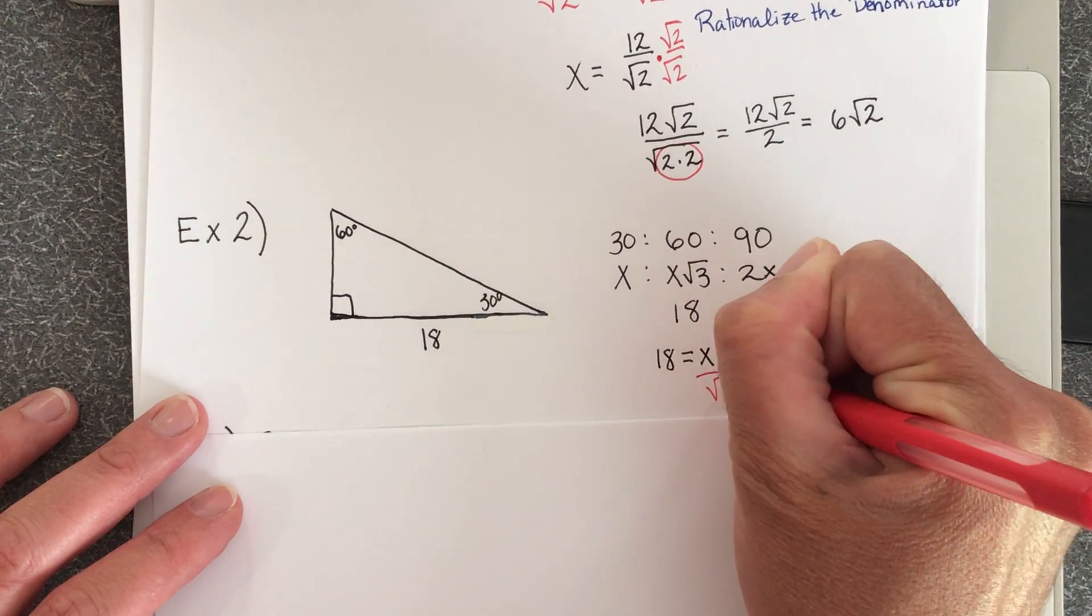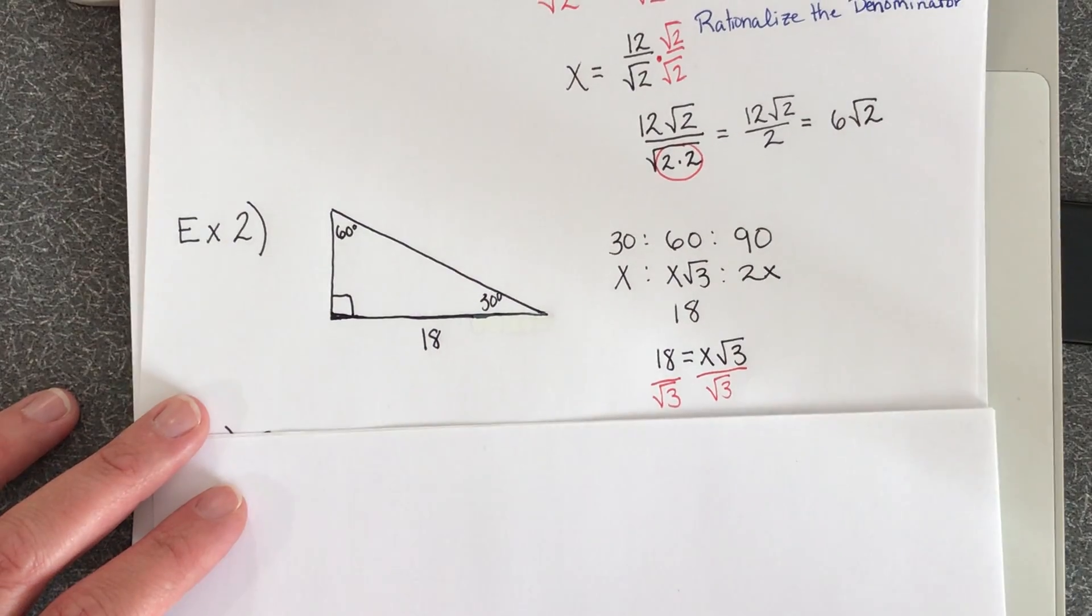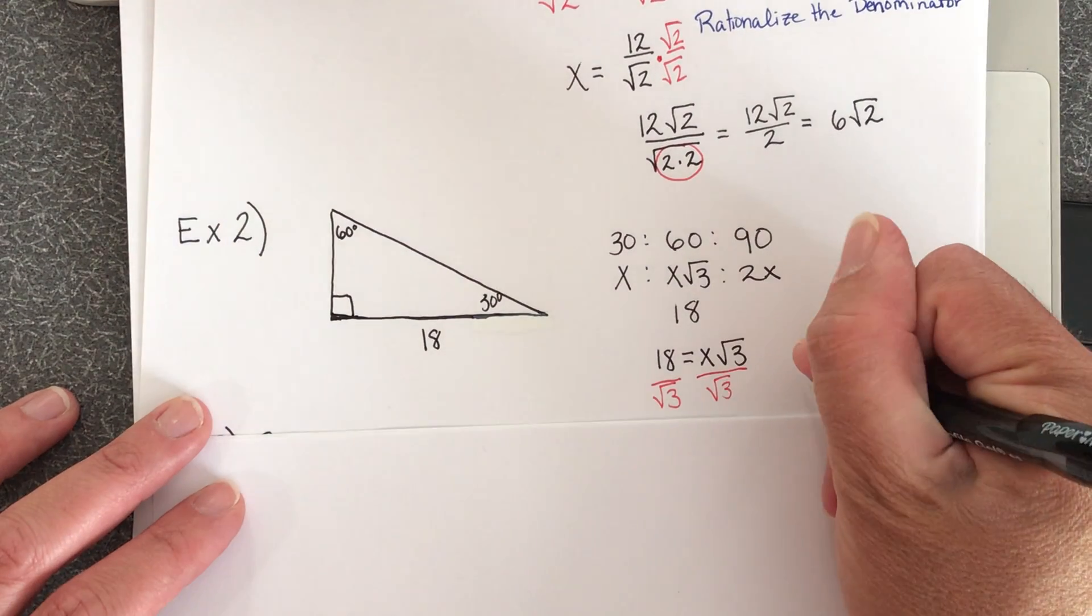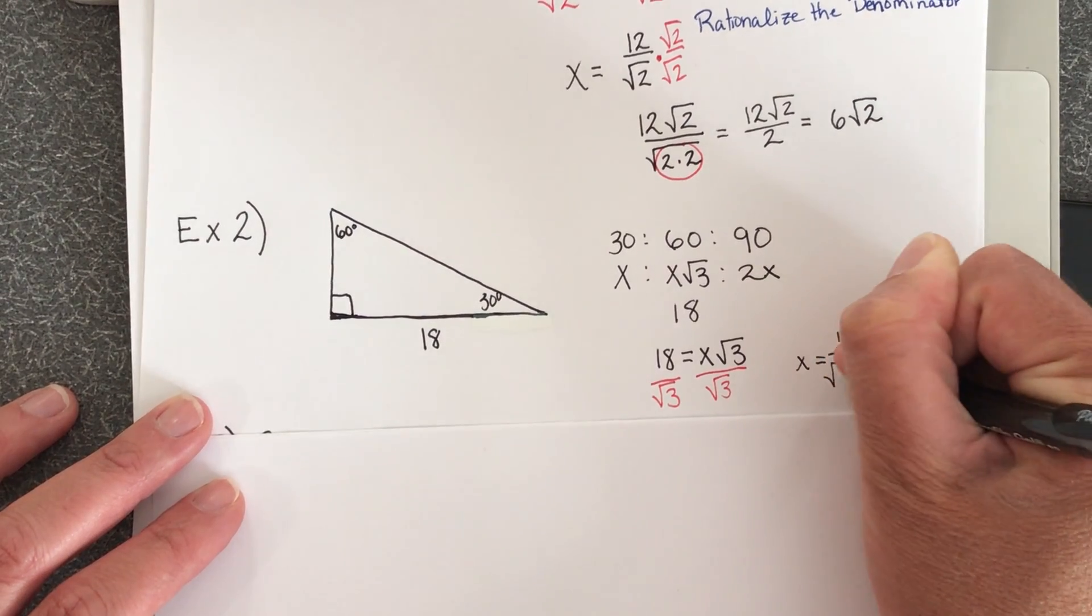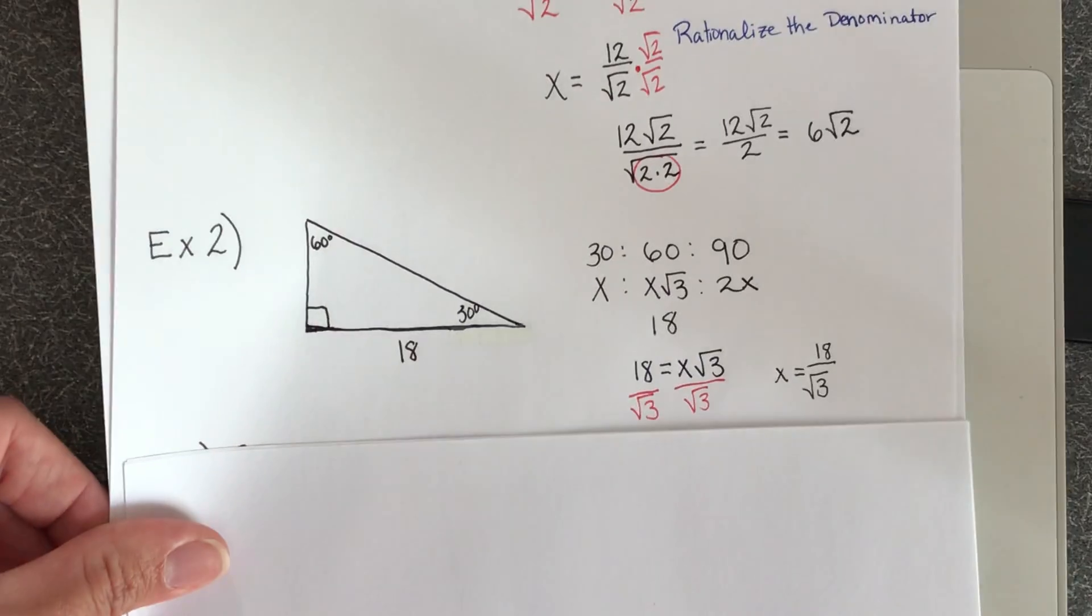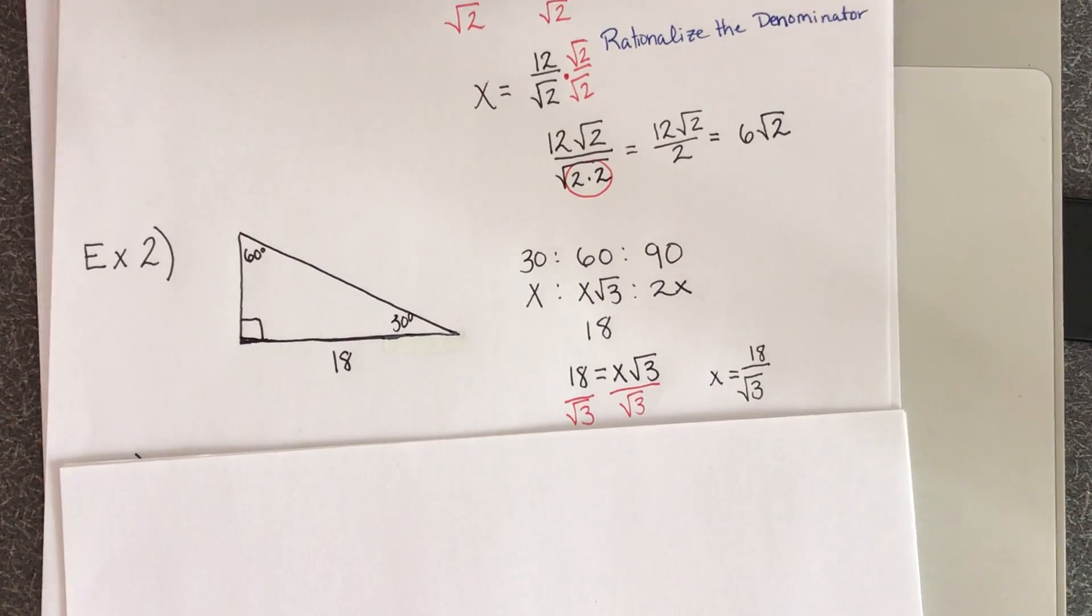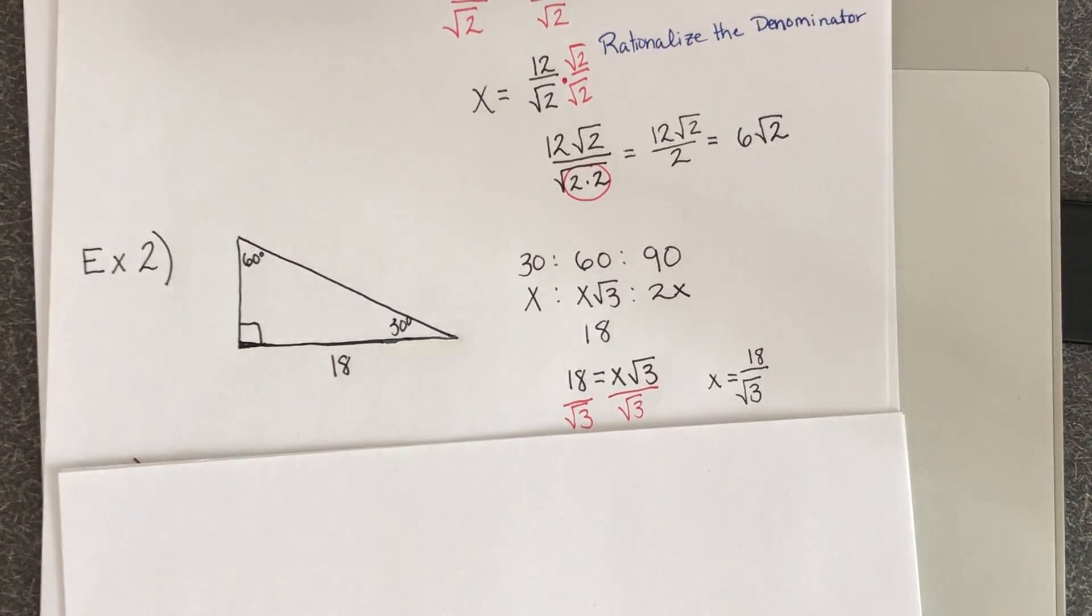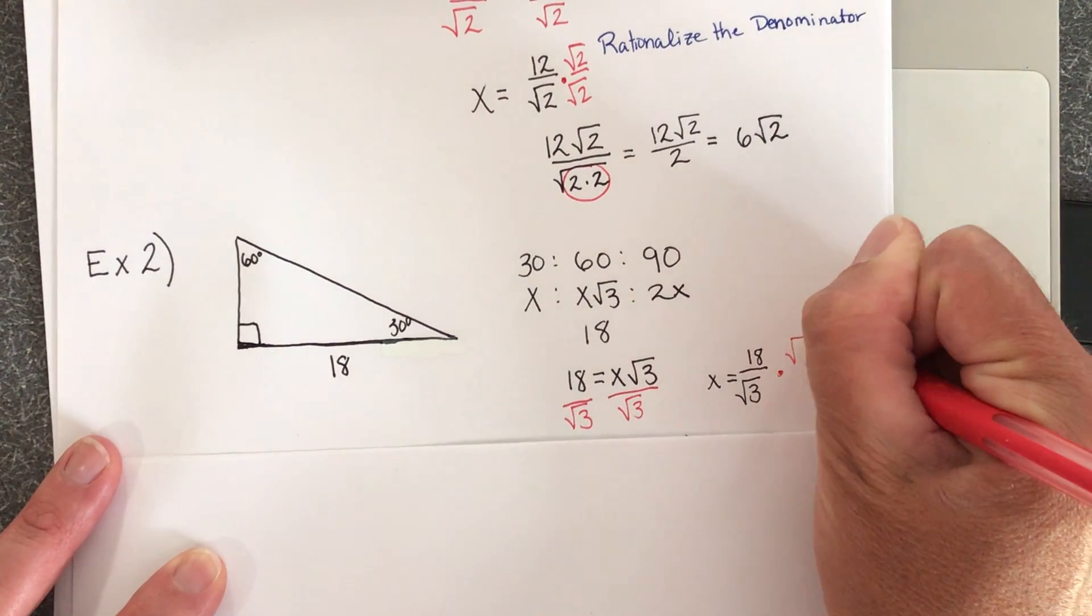So we're going to divide both sides by the square root of 3. But like we said before, it's not simplified when we've got a radical in the denominator. So we have to get rid of this radical in the denominator. So to do that, we're going to rationalize the denominator. Or in other words, we're going to multiply both the top and the bottom by the square root of 3.